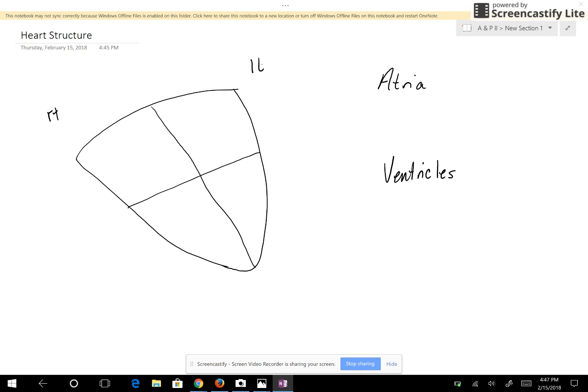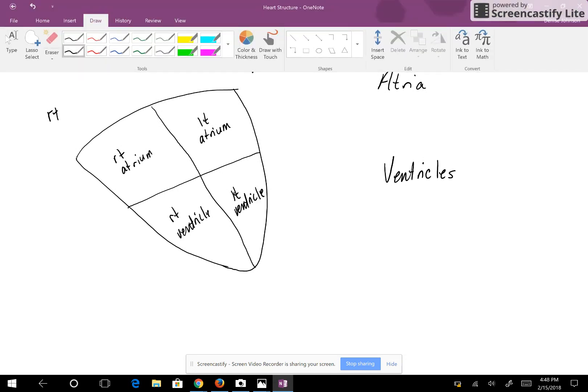This is the left side of the heart. So that makes this the right atrium, this is the left atrium, this is the right ventricle, and this is the left ventricle. Next we want to put in our four valves.